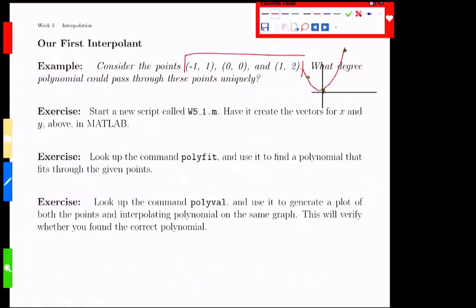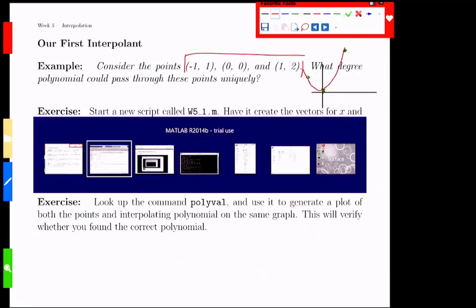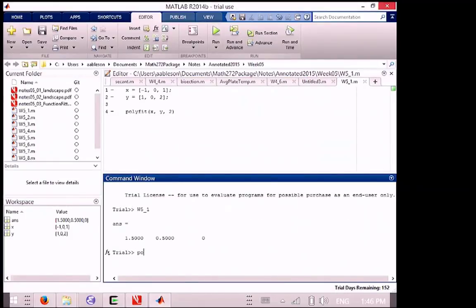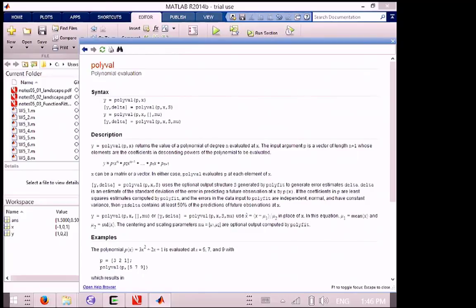Now I would feel a whole lot better if we could plot that. So we're going to use another command called polyval, which we'll also look up the help for. And a lot of the fitting and interpolation functions come in these pairs, a fitting and then an evaluation. So what this does is, at the top here, we're going to give it a polynomial. Oh wait, we don't give it a polynomial, we give it the coefficients of a polynomial. So that 1.5, 0.5, 0 is going to be our P. And then we're going to give it some more X values, and what it returns is the value of the polynomial evaluated at the X values.